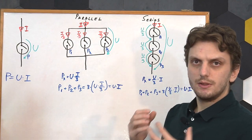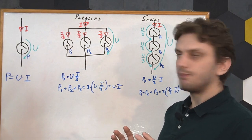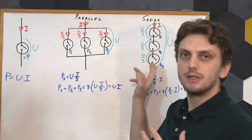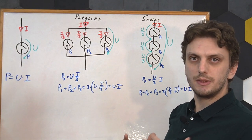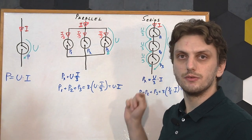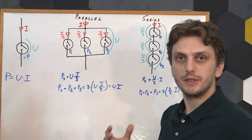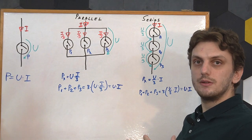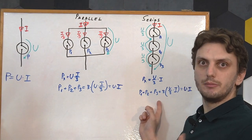With the series circuit, we get exactly the same thing, but rather than splitting up the current, we split up the voltage. So all of the elements see the exact same current, but they only see a portion of the voltage. The end result being, of course, that the power gets split up onto the multiple elements, but the total power is exactly the same as before.